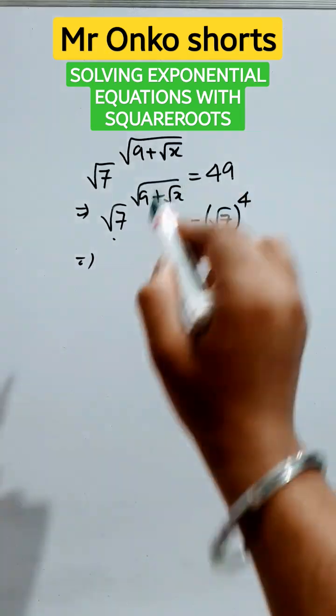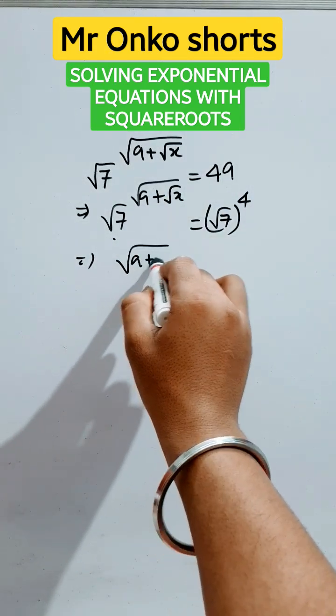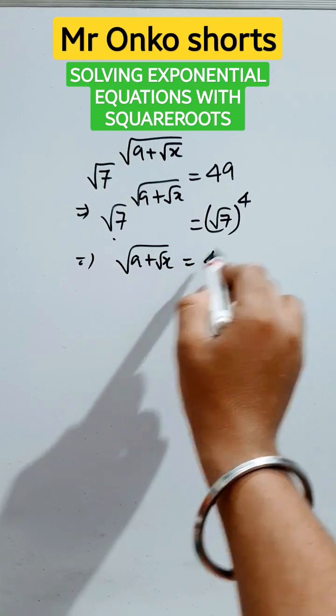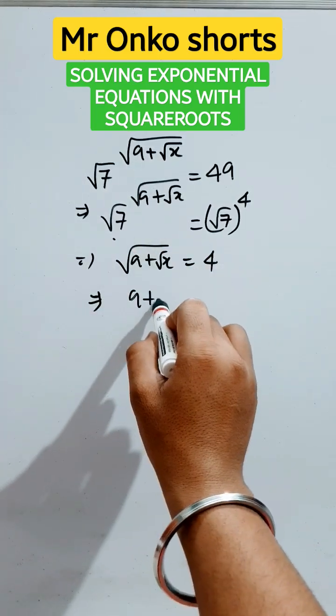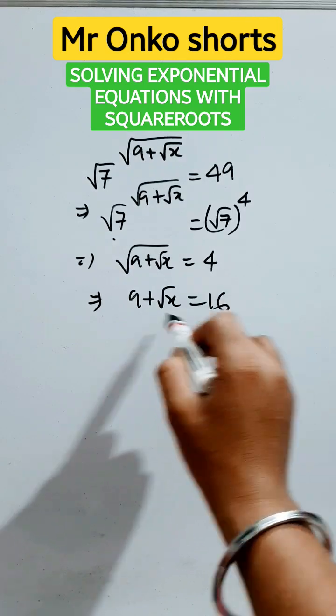Now, both the bases are same, it's an equation. So, the powers, the exponents must be equal like this. Now, we will remove the square root by taking square in both sides. It will be like this.